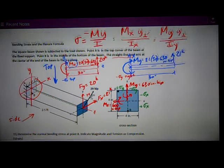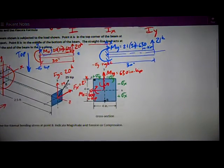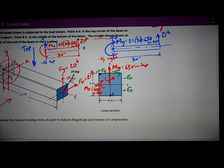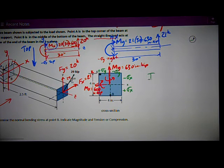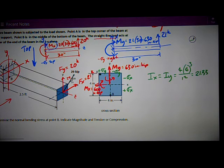Now I go back to my equation, which is MY over I. I need I, moment of inertia, about those two axes. This is a square, so IX is going to equal IY because the dimensions are the same. It's BH cubed over 12, 4 times 4 cubed divided by 12 is 21.33 inches to the fourth.